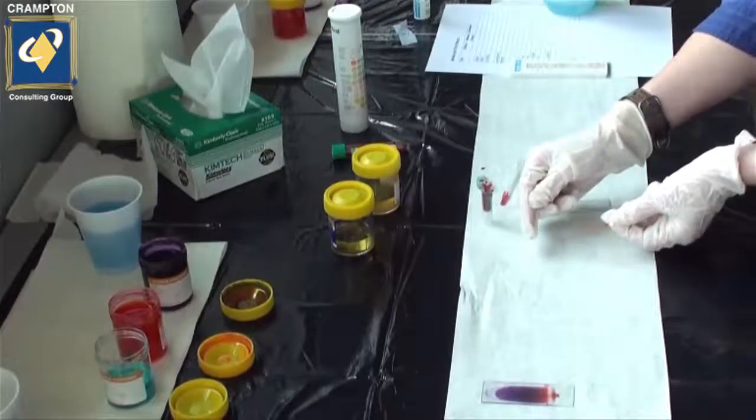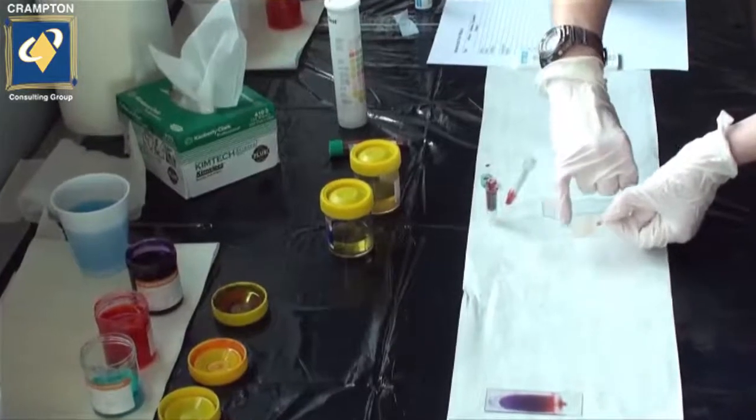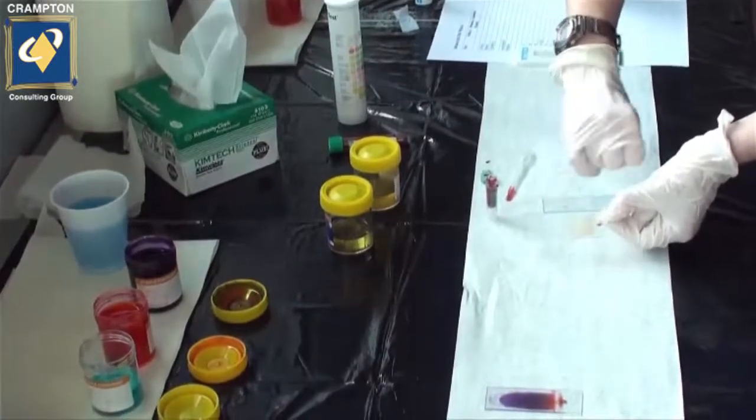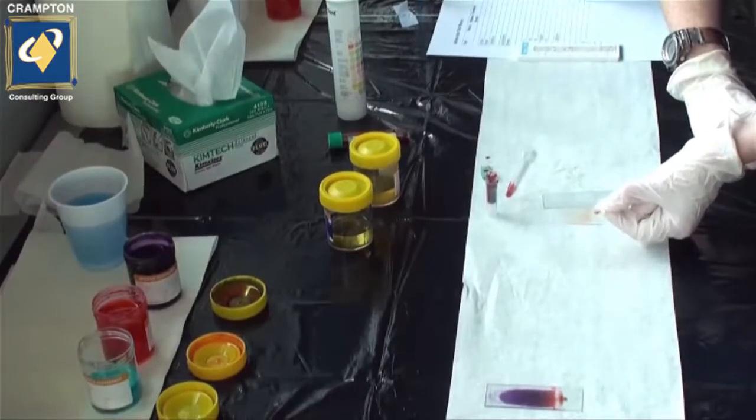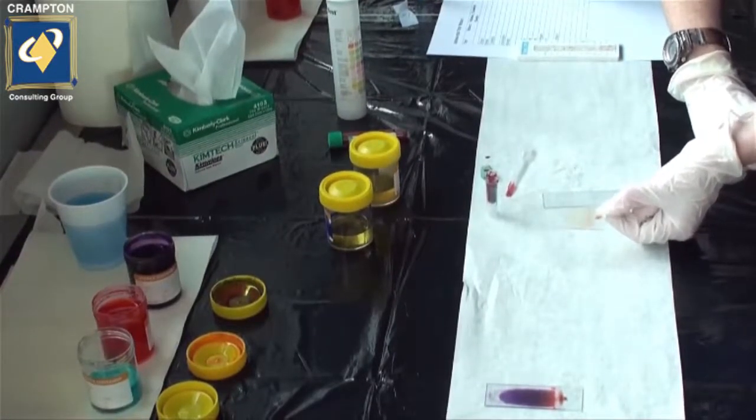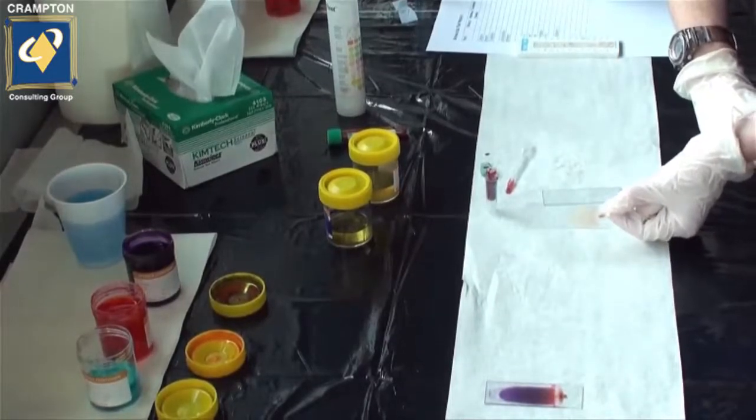The smear should be one level of red blood cells thick, and you should have adequate feathering towards the end. You shouldn't be able to see any streaks or holes. This can indicate that you're too wobbly in your technique, or you're applying too much pressure to the slide.